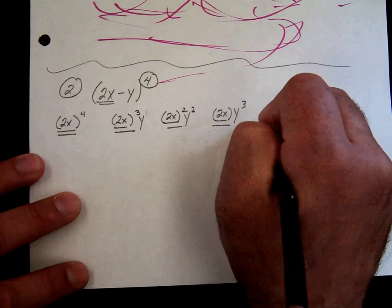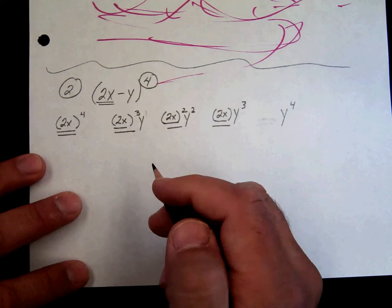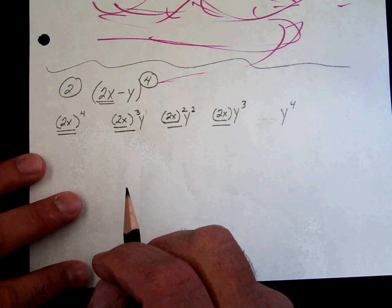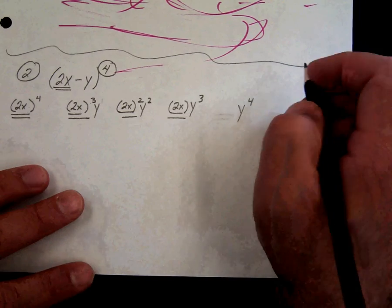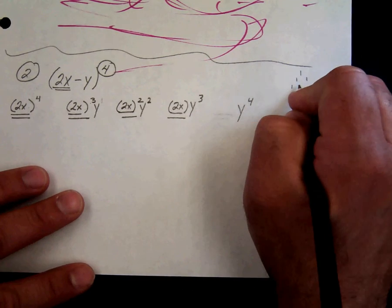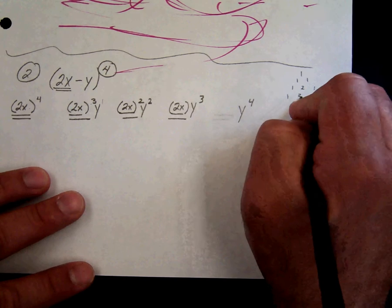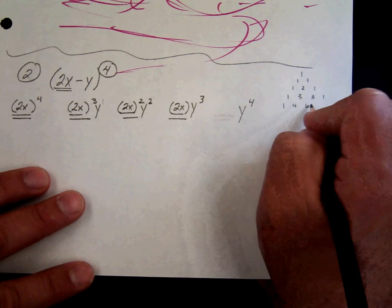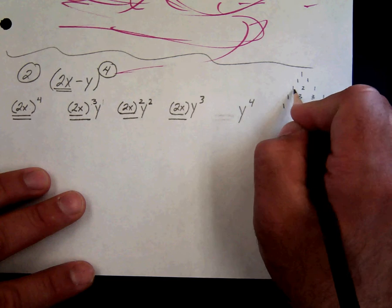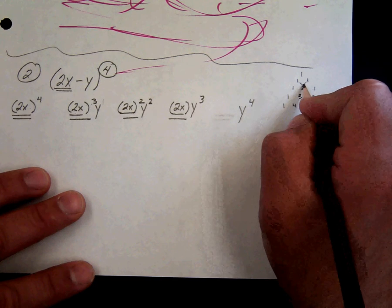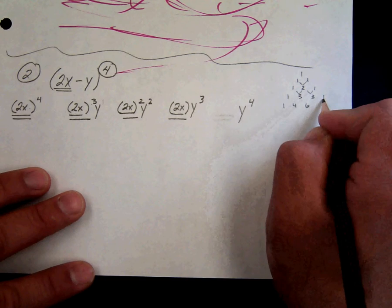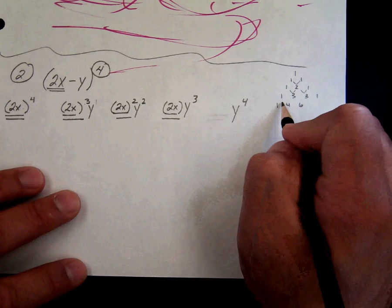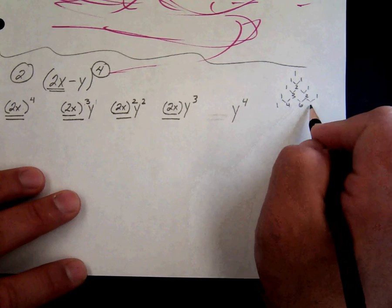I'm going to erase this because we don't really need it. Step 3, coefficients from row 4 in Pascal's Triangle. If you forget Pascal's Triangle, jot it down when you get your test tomorrow. It's built like this. You start with 1, 1, 1, and then the next row is 1. 1, add these, 1, 1, add these, add these, 1, 1, add these, add these, add these, 1.